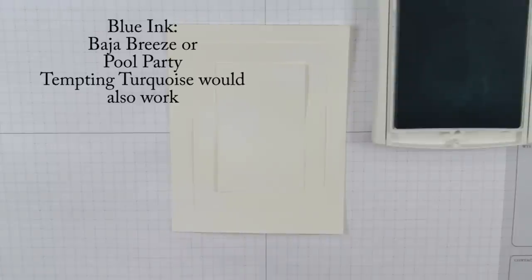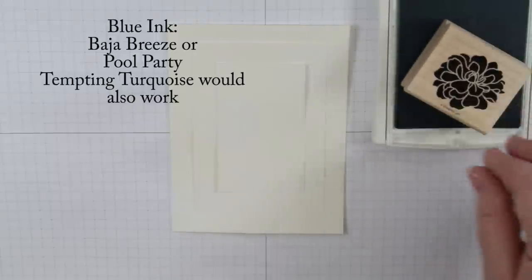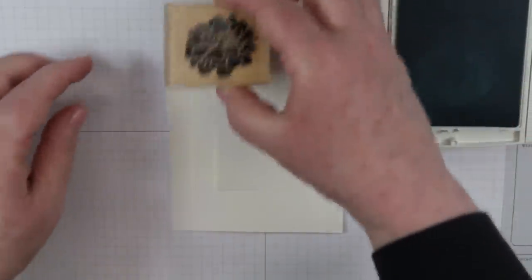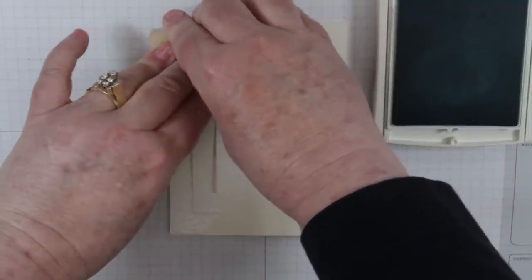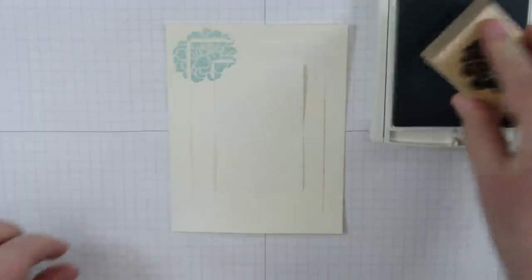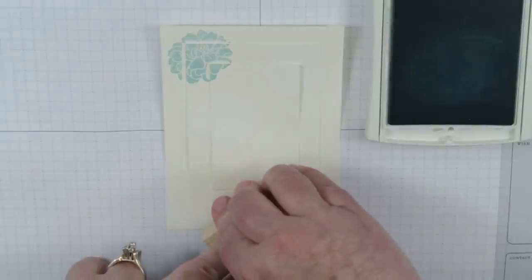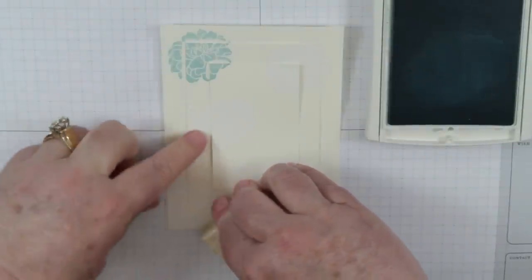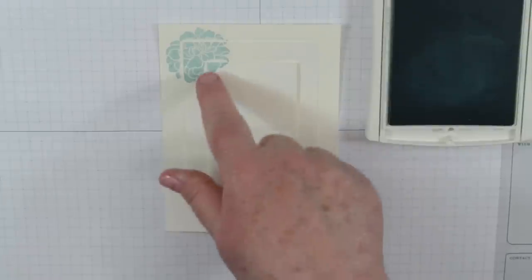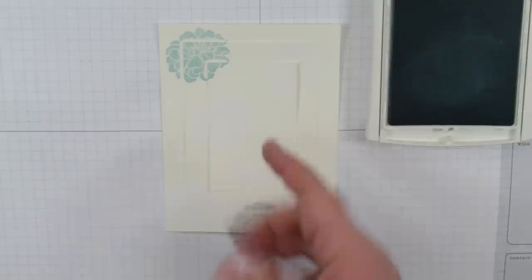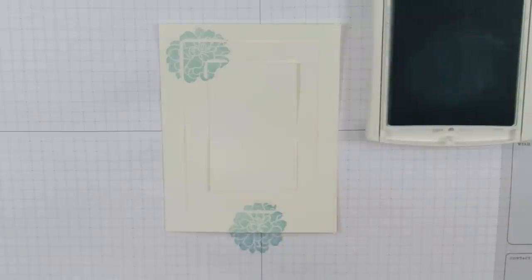Now I brought in my blue - I'm using Baja Breeze, which is almost retired, so Pool Party would also work. I'm inking up my stamp. I'm going to stamp one flower up here in this corner and another flower on an angle down here, only partially on the last two pieces of cardstock. Now you see how I'm getting a halo effect? That's why we're going to be matting. When you're doing layers like this, it's pretty impossible to get away with not having those. That's what's kind of cool - when I add the layers of the mats underneath, that all disappears, so don't worry about it.